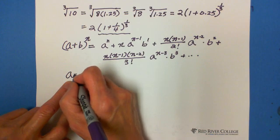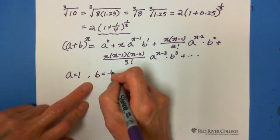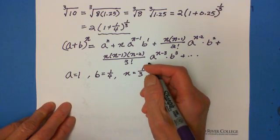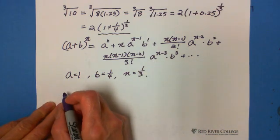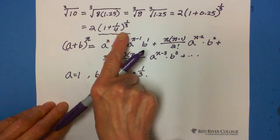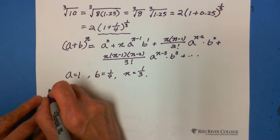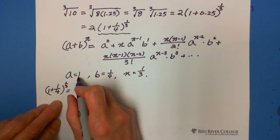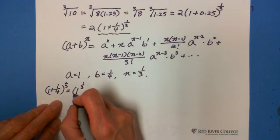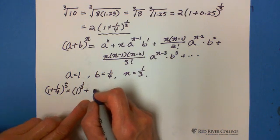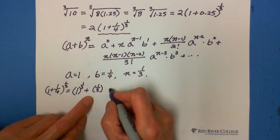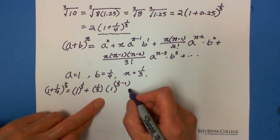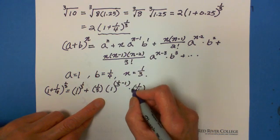In this case, obviously A equals 1, B equals 1/4, and N equals 1/3. Then we can write: (1 + 1/4) to the 1/3 exponent. The first term is 1 to the 1/3 exponent. Plus, the second term: N is 1/3, multiplied by A is 1 to the (N−1) = (1/3 − 1) exponent, times B is 1/4 to the 1 exponent.